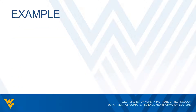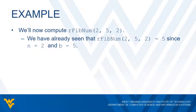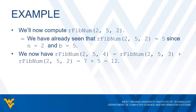Now for the second part: we need to compute RFibNum(2, 5, 2), but we've already done that — we already know it's five because N is two, so by our definition we get B, which is five. So RFibNum(2, 5, 4) equals RFibNum(2, 5, 3) plus RFibNum(2, 5, 2), which is seven plus five. That gives us twelve, and that is the result of RFibNum(2, 5, 4).